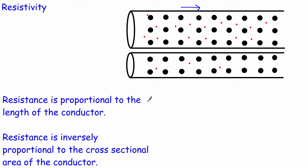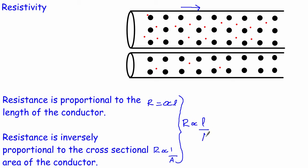We can sum these two statements up in symbols. Resistance is proportional to length, and resistance is proportional to 1 over the area — in other words, inversely proportional to area. Combining these two statements: resistance is proportional to L over A. Proportional signs make it difficult to do actual calculations, so we replace the proportional sign with an equals sign and introduce a constant. We write: resistance equals some constant times L over A. And it's this constant that is the resistivity.